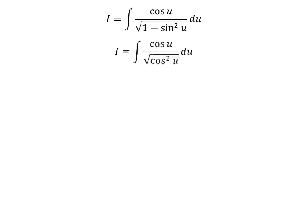We know the identity 1 minus square of sine of u equals square of cosine of u. So i equals the integral of cosine of u upon square root of square of cosine of u. Since the square root of the square of cosine of u is cosine of u, i equals the integral of cosine of u upon cosine of u with respect to u. Cancelling the common factor cosine of u gives i equal to the integral of 1 with respect to u.